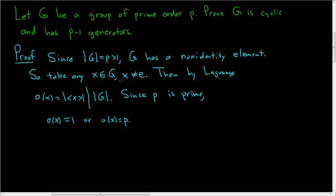But X is not the identity. So since X is not the identity, the order of X cannot be equal to 1. Hence, the order of X is equal to P.